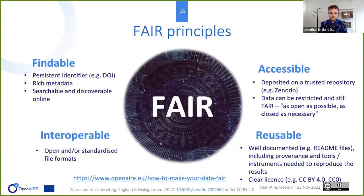For Accessible, you need to deposit on a trusted repository because there are automated ways of making the data accessible — even if it's closed or restricted, it can still be made available in an automated way. Just putting a statement saying 'the data will be made available if you send an email to the author' is not accessible, because what happens if the author passes away? That's why we want to deposit on a repository.